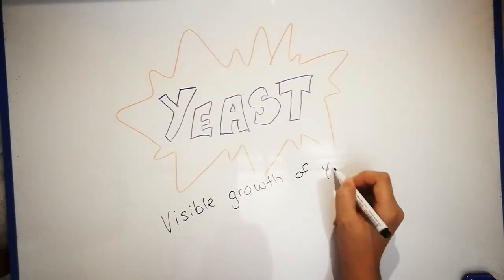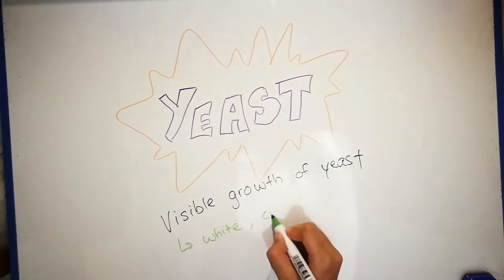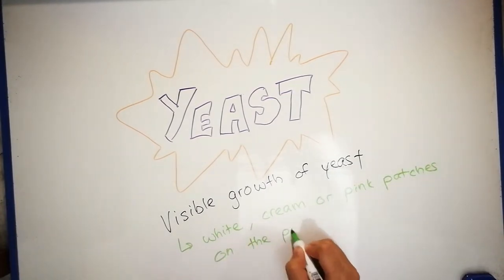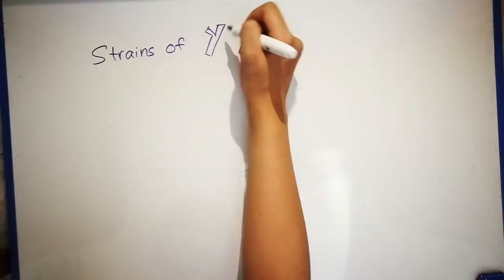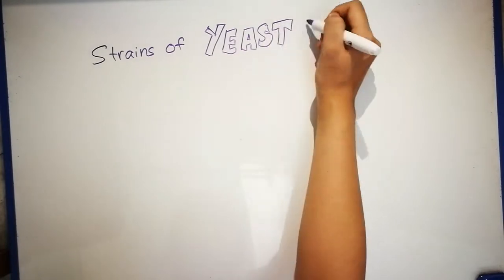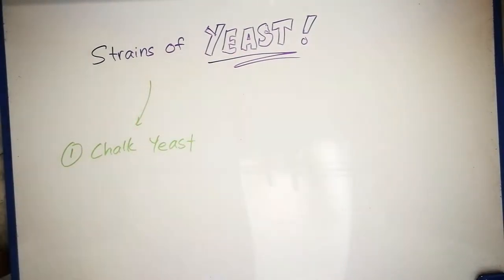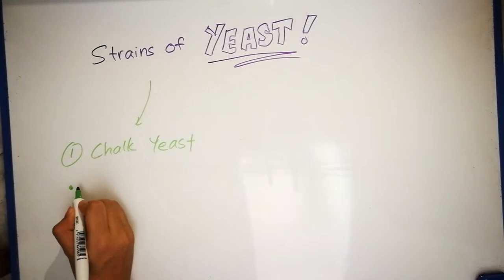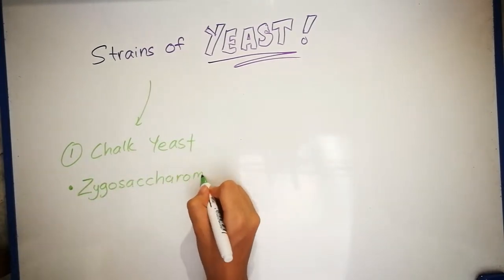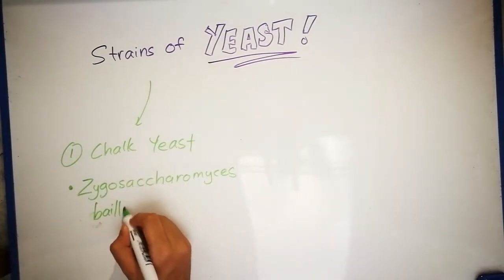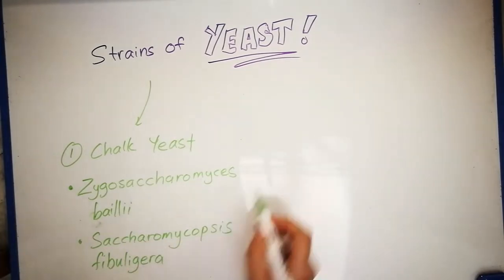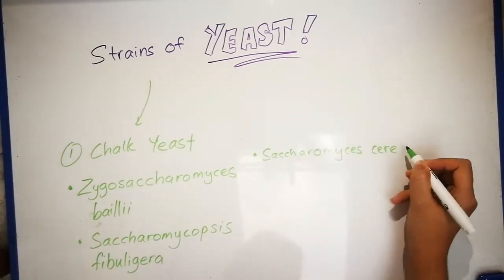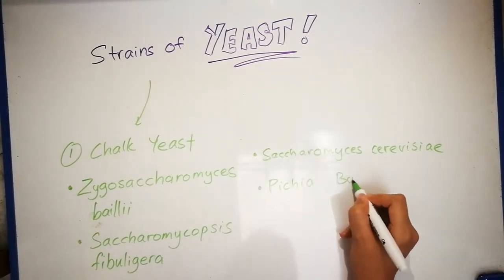Now, yeast spoilage can be detected by the visible growth of yeast on the product surface, which will look like white, cream, or pink patches on the product. The strains of yeast include chalk yeast, such as Zygosaccharomyces rouxii, Saccharomycopsis fibuligera, Saccharomyces cerevisiae, and lastly, Pichia burtonii.